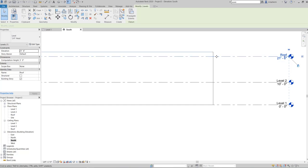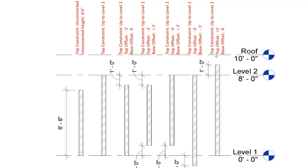Let me explain the constraint and offset concepts using a figure from the book on page 6-2. The walls shown are mostly constrained to Level 1 and Level 2 from bottom and top. The first wall has an unconnected top constraint with a fixed height of six feet six inches. The second wall has base on Level 1 and top on Level 2 with no offset. Subsequent walls show combinations of negative top offset, positive base offset, and both constraints attached to levels.